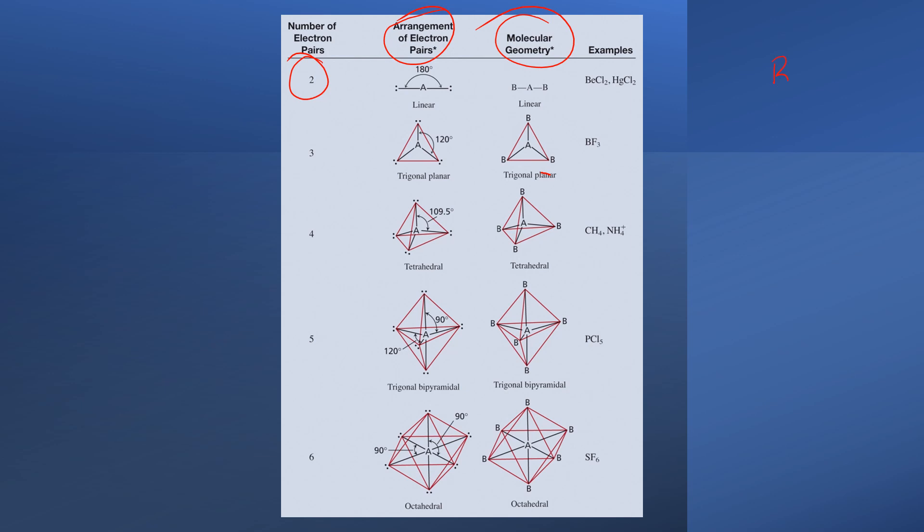This would be something like BECL2. For simplicity, I'm not going to write electron pairs around the chlorine because they don't matter. It's only BE that we're looking at. In order for the bonding electrons on beryllium to be as far apart from one another as possible, this molecule is going to assume a linear conformation.